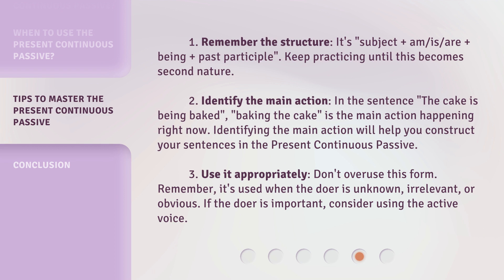Tip 3: Use it appropriately. Don't overuse this form. Remember, it's used when the doer is unknown, irrelevant, or obvious. If the doer is important, consider using the active voice instead.